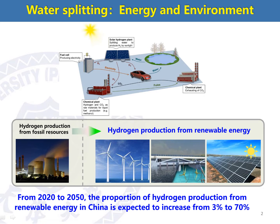Currently in China, hydrogen production is mainly from fossil resources, like the reforming of fossil resources. But as expected, renewable or sustainable hydrogen energy will be increased to 70% by 2050.